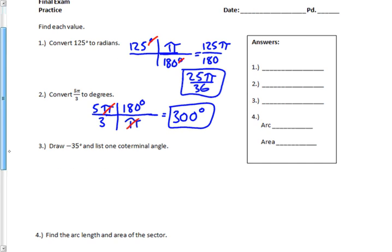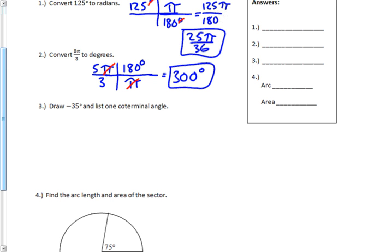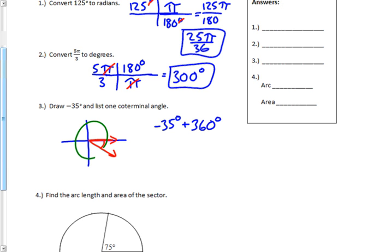This one asked me to draw a negative 35-degree angle. This doesn't have to be super accurate — I just want to determine what quadrant it's going to be in. The starting position is right here on the x-axis, and negative 35 degrees means I'm going clockwise. So 35 degrees is right around in here somewhere — that's my negative 35-degree angle. To list one coterminal angle, I take the –35 degrees and add or subtract multiples of 360. For example, adding 360 degrees takes me around the circle one more time and lands me at the same spot.